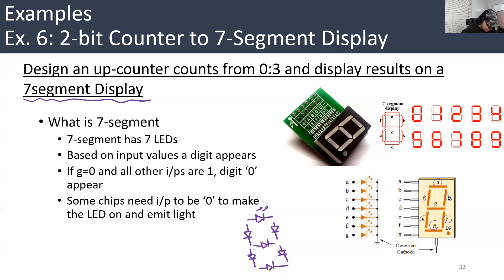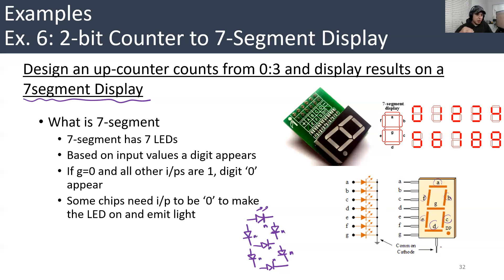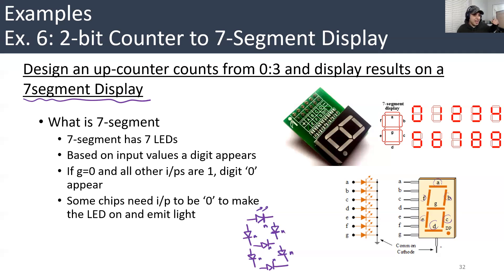The idea is simple. You either connect all the cathodes — the cathode is basically the end portion, this stick here — to ground and you play with the anode to control whether to light on the LED or turn it off.